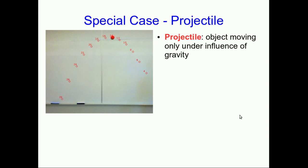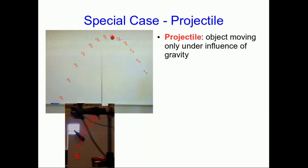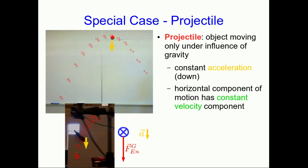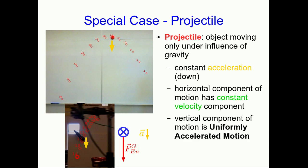One special case is the projectile — an object moving only under the influence of gravity. When you throw a ball, that's a projectile, as long as air drag is negligible. We've already seen this case, because that's what our object dropped from the moving cart was. The only force acting on it was gravity, resulting in a constant acceleration downward. The outcome is that the horizontal component of the motion is a constant velocity motion, whereas the vertical component is uniformly accelerated motion, which we're familiar with from earlier in the course.